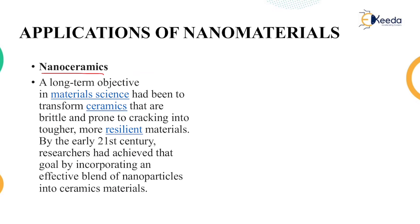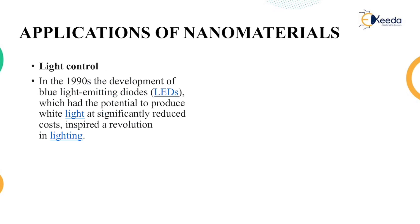Nanoceramics: a long-term objective of materials science has been to transform ceramics — which are brittle and prone to cracking — into tougher, more resilient ones. Today we have acrylic ceramics; we have plates and bowls that look like ceramic or porcelain ones, but when you drop them they do not break at all, because they are made up of nanomaterials.